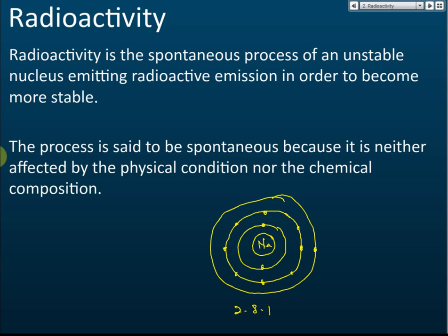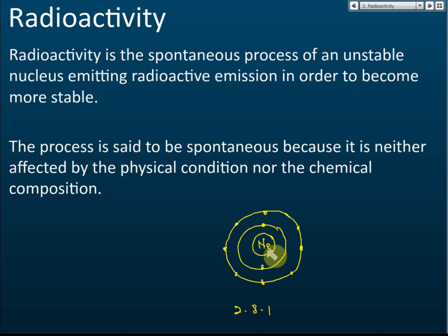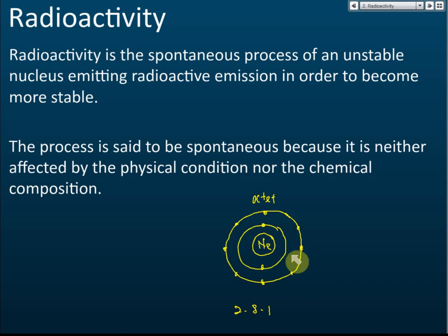If the electron arrangement is 2, 8 — like neon — we call this octet, meaning there are eight electrons in the valence shell. This configuration is stable. This is the stability of the atom.